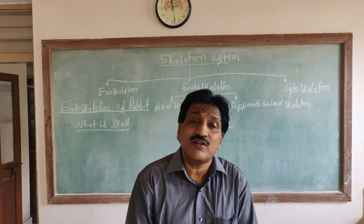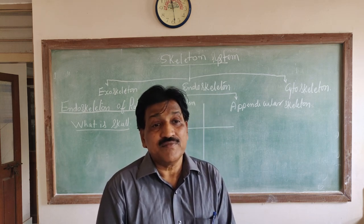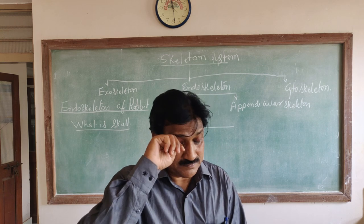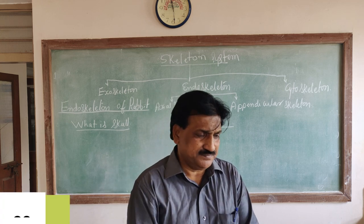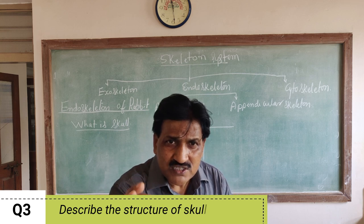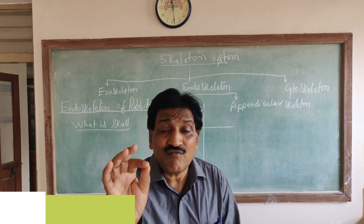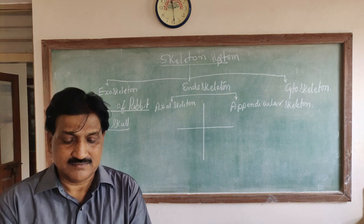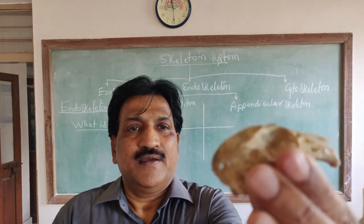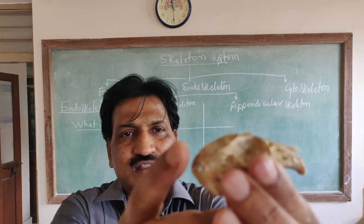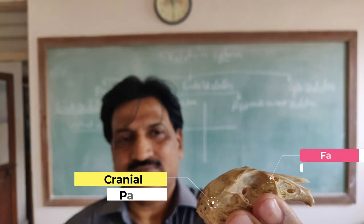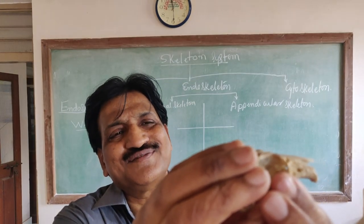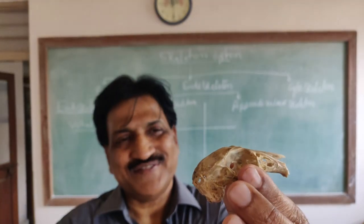There may be 5-mark questions on the skull of rabbit: describe the structure of the skull of rabbit. In case of the rabbit, the skull has two parts: the cranium and the facial part. The cranium part is large, whereas the facial part is narrow in nature.